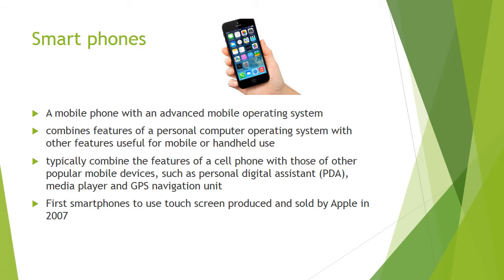Here we have smartphones. This is perhaps the most common way people in today's society are using personal area networks. Smartphones combine the features of a personal computing operating system with many other features such as GPS, personal area networks, and high-bandwidth internet. The first smartphones using a touch screen were produced by Apple — the iPhone 1 — in 2007.